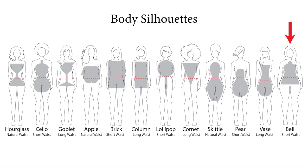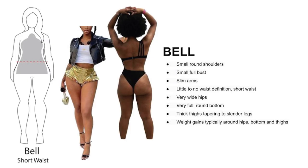We finish with the bell. This silhouette is often curvy and full figure. Here are the key features: small round shoulders, small full busts, slim arms, little to no waist definition, short-waisted, very wide hips, very full round bottom. Big thighs tapering down to slender legs. Weight gain is typically around the hips, bottom, and thighs.